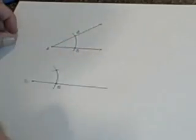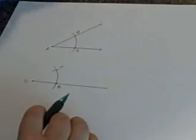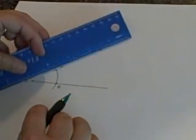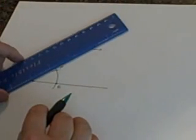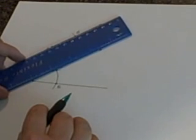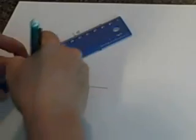Now mark that point of intersection, label it F. Draw a ray which goes through, starts at D and goes through F.